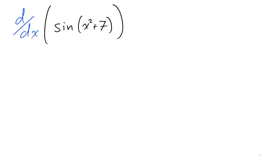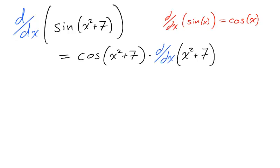If you like, you can do this in two steps. We take the derivative of the outside, leaving the inside alone, and then multiply by the derivative of the inside, which we have yet to take.